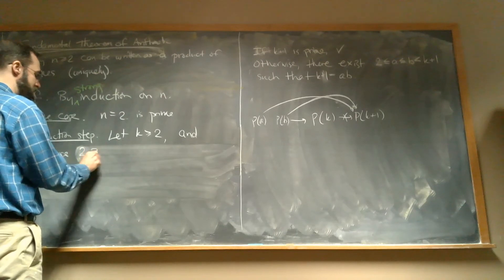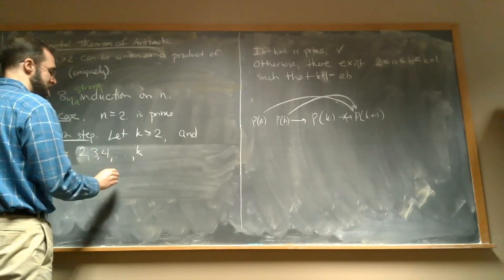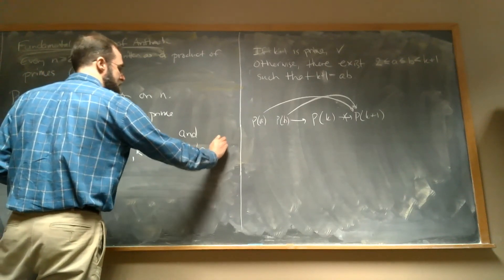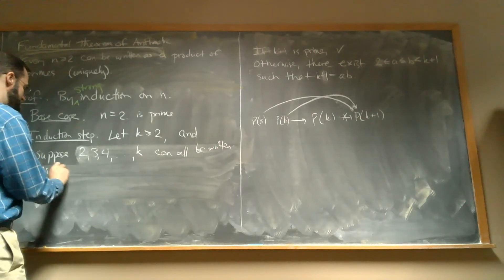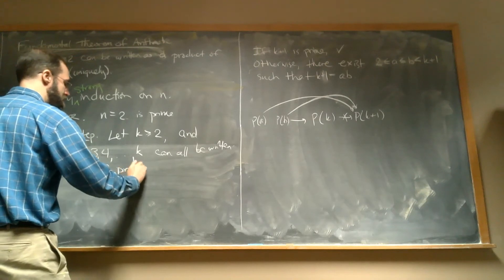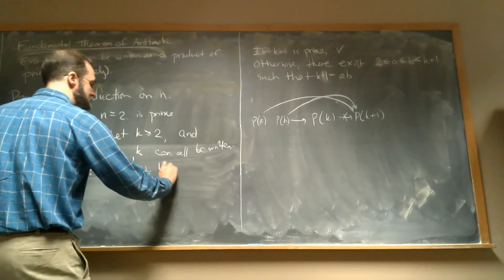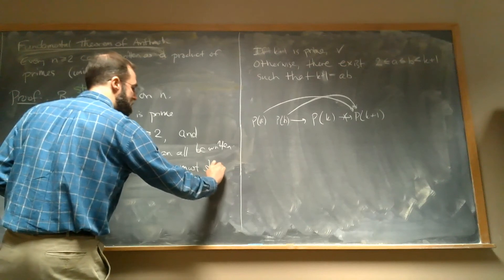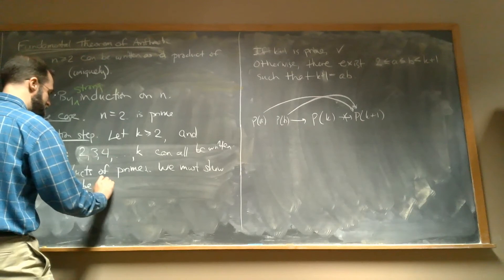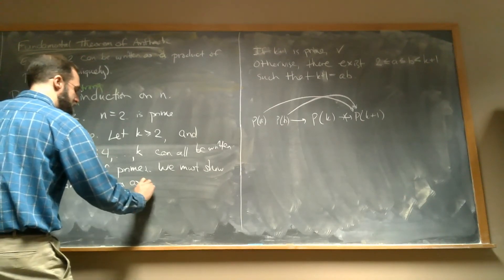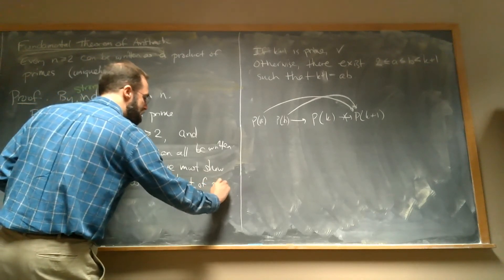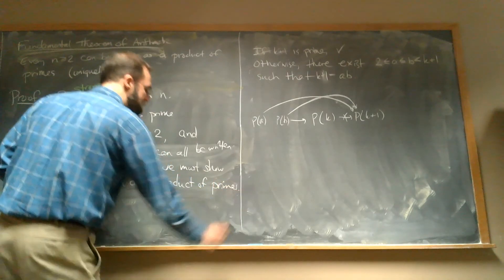We're going to suppose that 2, 3, 4, dot dot dot, everything up to K can all be written as product of primes. And then we still have to show the same thing. We must show K plus 1 can be written as a product of primes.